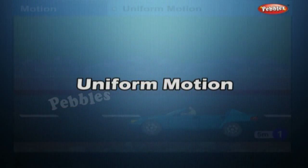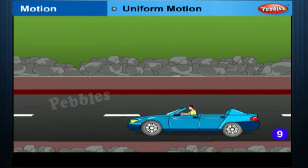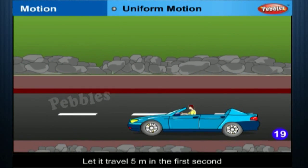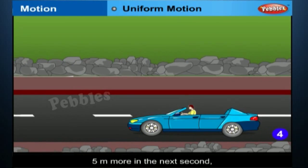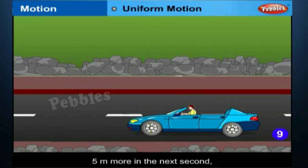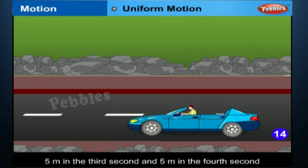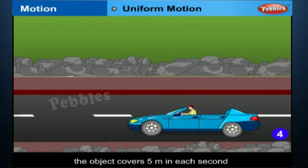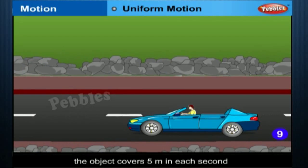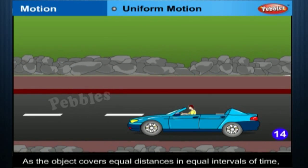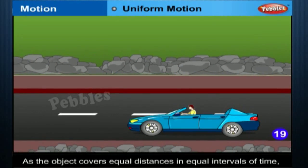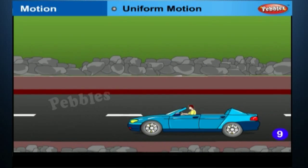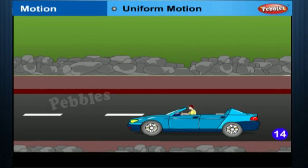Uniform Motion. Consider an object moving along a straight line. Let it travel five meters in the first second, five meters more in the second second, five meters in the third second and five meters in the fourth second. In this case, the object covers five meters in each second. As the object covers equal distances in equal intervals of time, it is said to be in uniform motion. The time interval in this motion should be small.